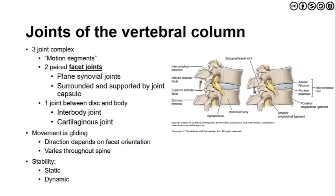At the vertebral column we have a three-joint complex — some say five joints, counting two paired facet joints and the disc-body joint. Movement is always gliding and depends on the direction of facet orientation, which varies throughout the spine. The reason for this gliding pattern is to achieve an interplay between static and dynamic balance.